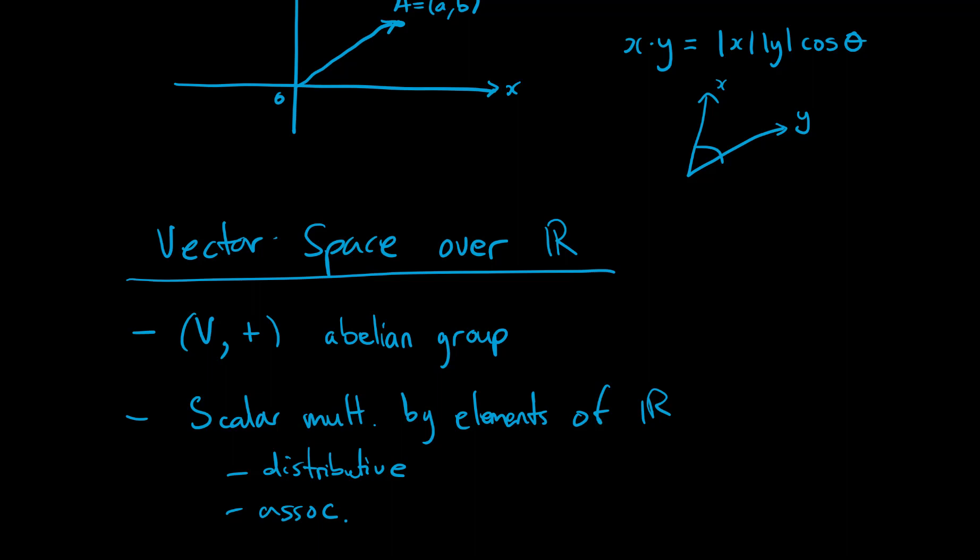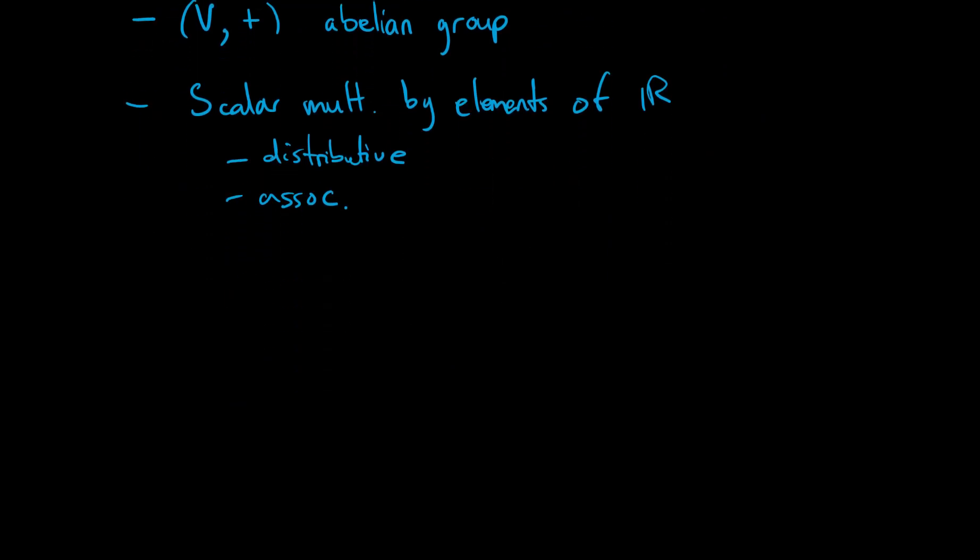So that set V could be anything we want. It could be those ordered pairs in R squared. But V doesn't have to be that. What about another example? What if V is actually the set of functions such that f is continuous on [-1,1] and f goes from [-1,1] to R?